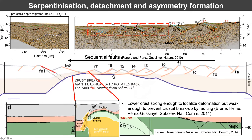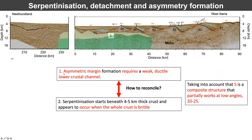With Sasha, we used dynamic models to analyze the conditions under which asymmetric margins would be formed. We found that in order for this lateral rift migration to occur, we needed a lower crust that was strong enough to localize the deformation in only one fault, but weak enough to prevent crustal breakup by faulting. On the one hand, we've seen that asymmetric margin formation requires a weak ductile lower crustal channel, even if narrow. On the other hand, serpentinization already starts beneath four to five kilometers thick crust and requires brittle faults to bring water into the mantle.